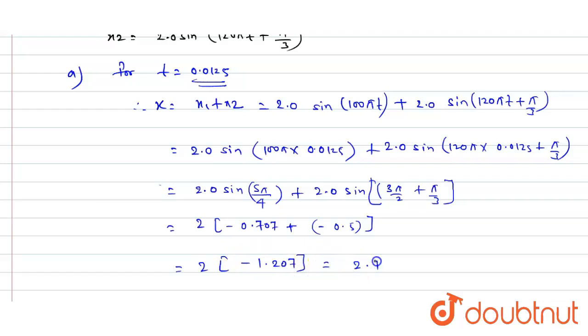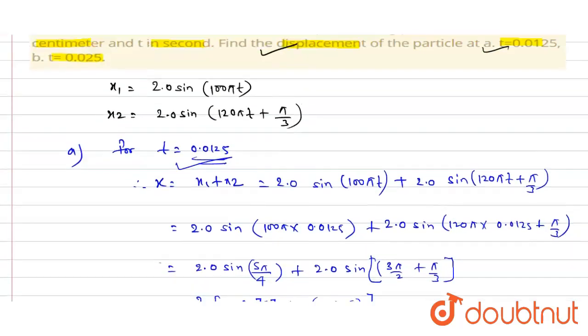Adding the terms: 2 multiplied by (−0.707 + (−0.5)) = 2 × (−1.207), giving a displacement of approximately −2.41 centimeters for time t = 0.0125 s.